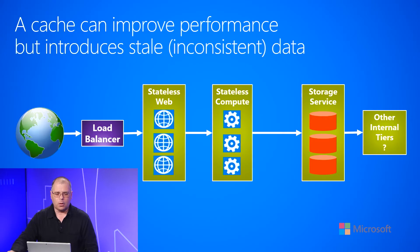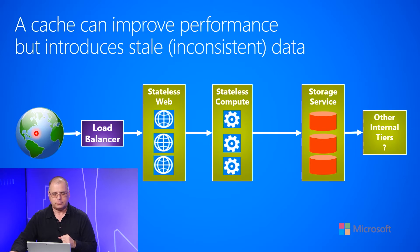On this slide here we talk about the general flow, or a canonical reference architecture, of how people build a lot of services. What I show here is that you have customers on the internet making a request of your service. The request comes into the data center where it hits a load balancer.